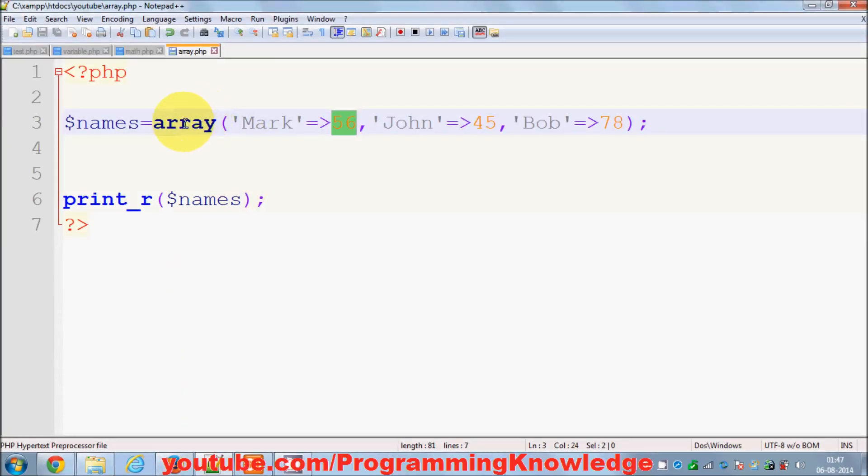you want to print a specific value. I want to print the weight of Mark. I can just write 'echo' and then I can say 'weight of Mark is' and use this concatenation operator like this, and then just use this variable array name and within the square bracket just provide the key. Now the key is 'Mark', so just copy